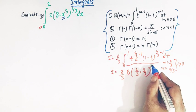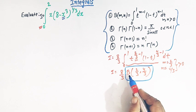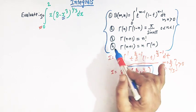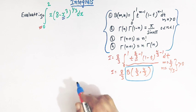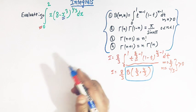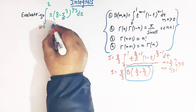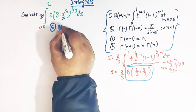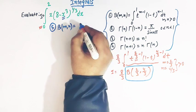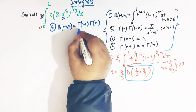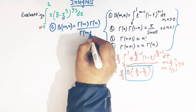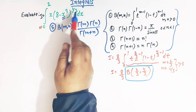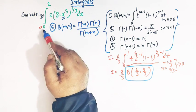Now we need to find the value of beta(2/3, 4/3). There is one more important result — the fifth formula — which is used here: beta(m, n) equals gamma(m) times gamma(n) divided by gamma(m plus n). This is the fifth result which is useful in evaluating this integral.